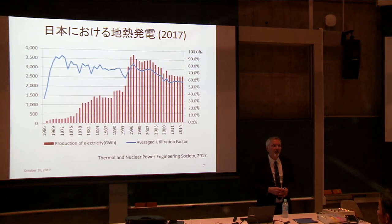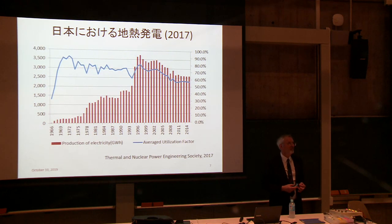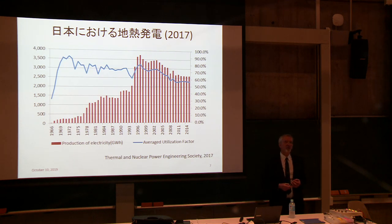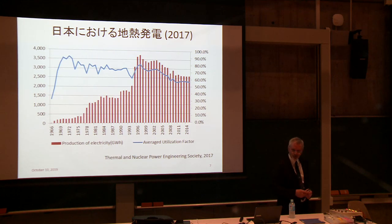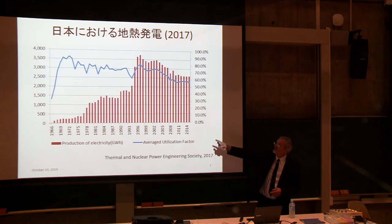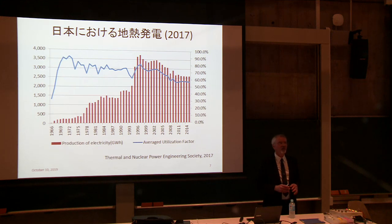Japan was a very early developer of geothermal energy, actually a kind of pioneer. The first geothermal plant in Japan, in Otake in Kyushu, was built 50 years ago and is still in operation today. Japan led the world in many of those early developments, continuing up through the 1990s. But since 1990, over the last 20 years or so, geothermal energy has been slowly fading away.